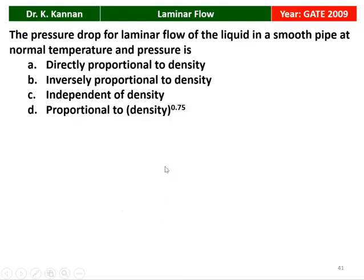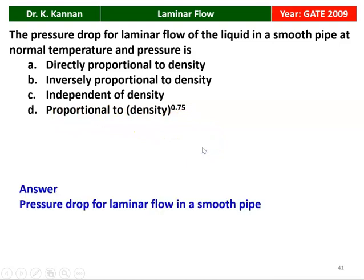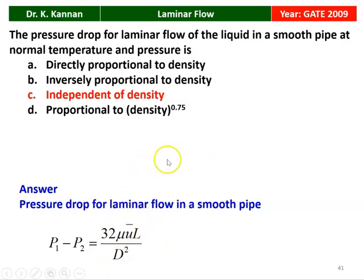Next question from the 2009 question paper. The pressure drop for laminar flow of a liquid in a smooth pipe at normal temperature and pressure — is it directly proportional, inversely proportional, or independent of density? The pressure drop formula is P₁ − P₂ = 32μū L/d². Since density does not appear on the right-hand side, the pressure drop is independent of the density of the fluid.